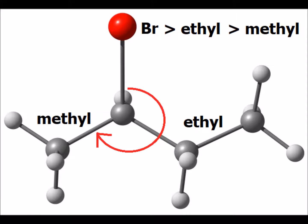As we move from the highest priority substituent, bromine, to the next highest, ethyl, to the following methyl, we notice that we make a clockwise rotation. Therefore we have the R, or rectus isomer, of 2-bromobutane.